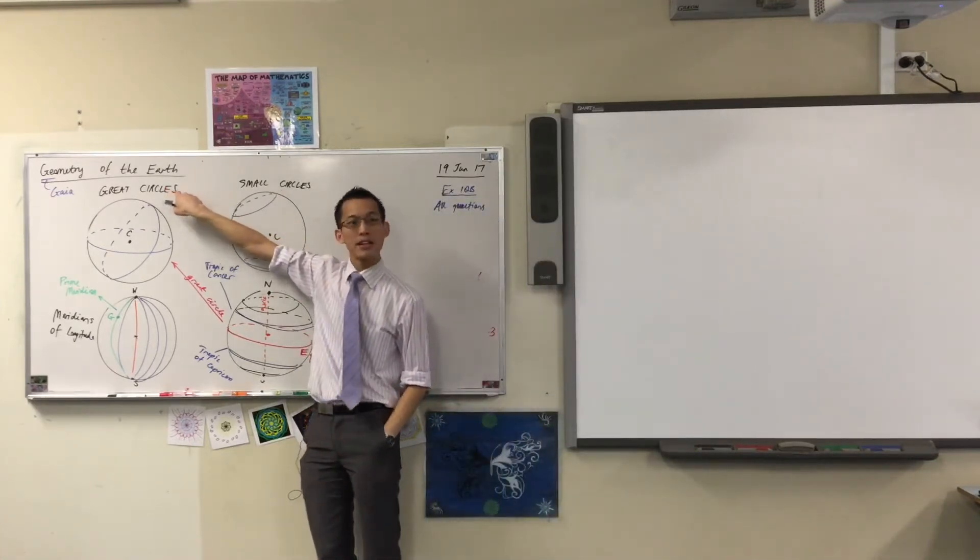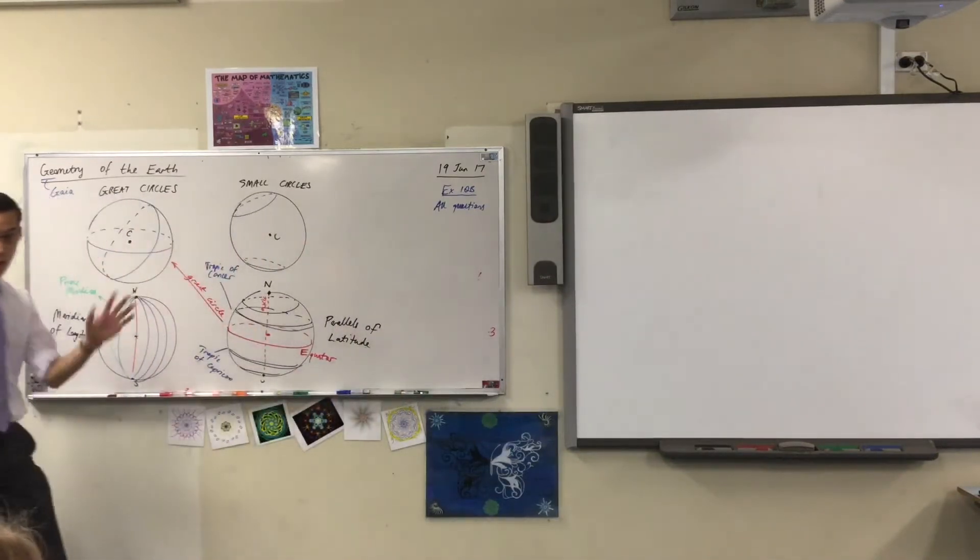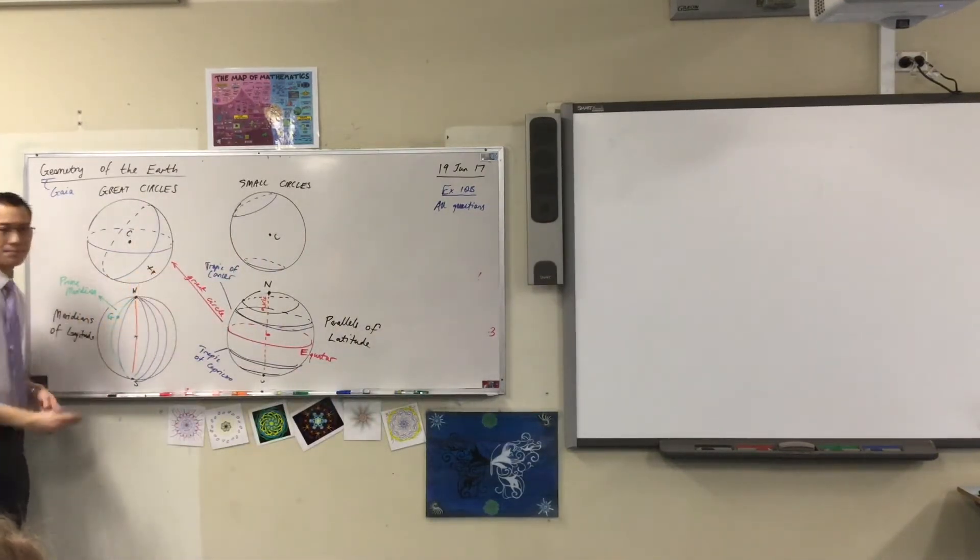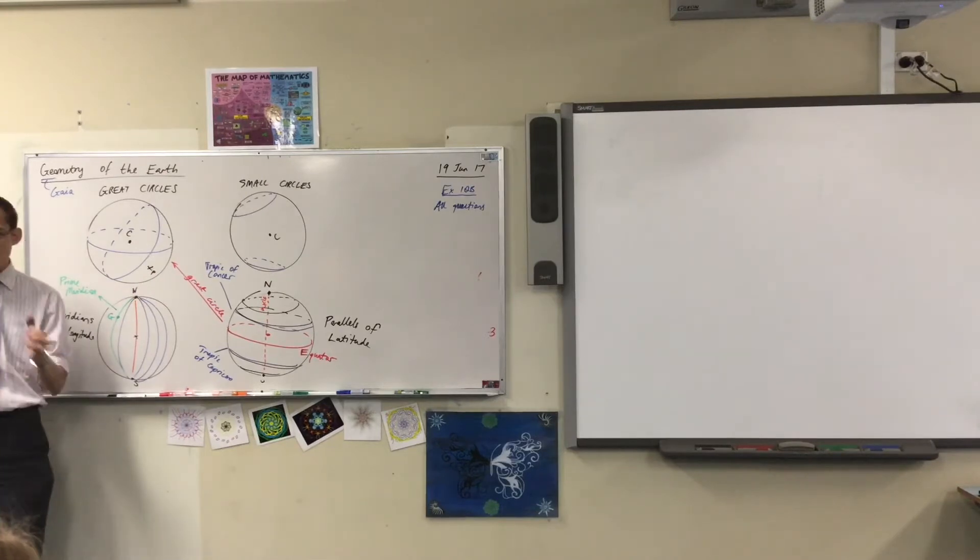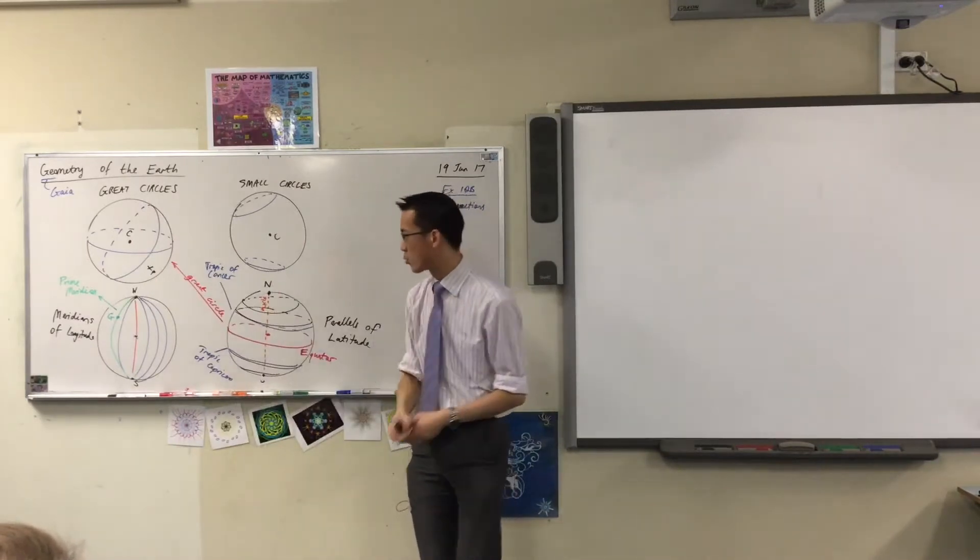One of the questions says how many great circles can you draw through a particular point that you pick anywhere on the sphere? So if I pick a point here, I think it's pretty apparent to everyone you can draw at least one great circle. You can draw at least one.